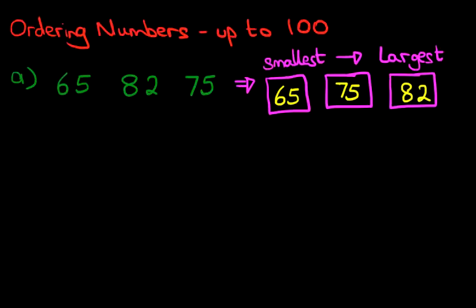Now, using the number grid, it really is as simple as that. Once you've got the number grid, you know how to use it. You can work these out. Not just three numbers, but if you've got four, five, six numbers, you can use the number grid and come to the answer very quickly.